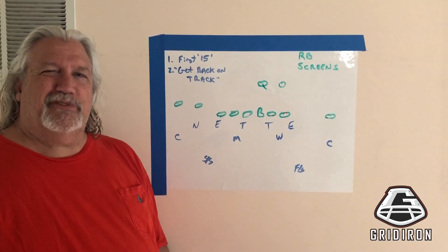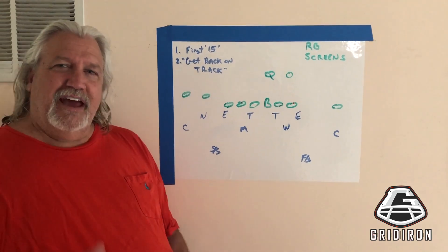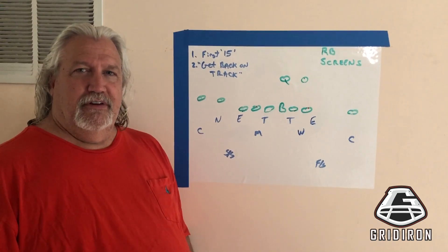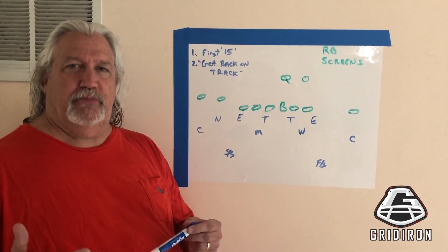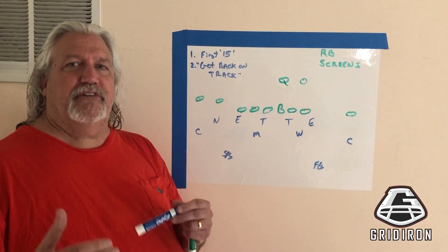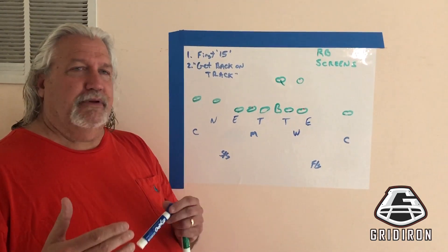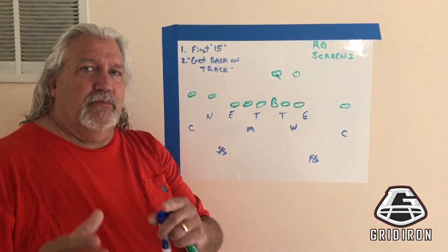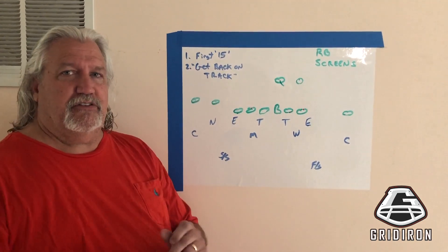This is Rob Ryan. Welcome to X's and O's. Today we're going to talk about running back screens, the most popular ones used in the National Football League. NFL offenses use these as a weapon — it's a small risk, big reward type of play for the offense.